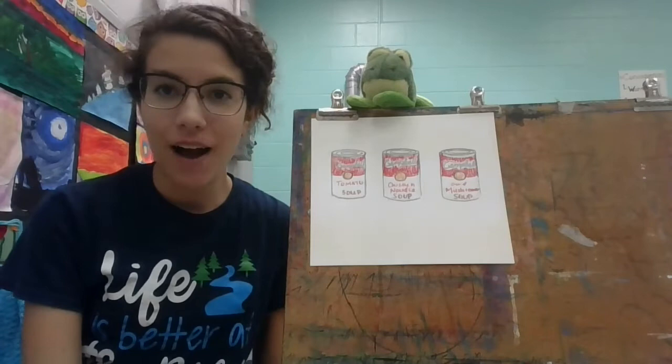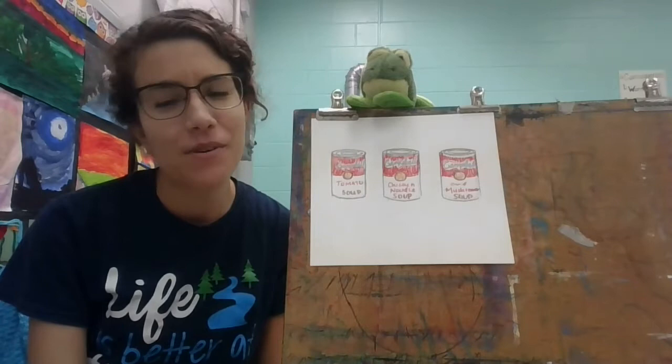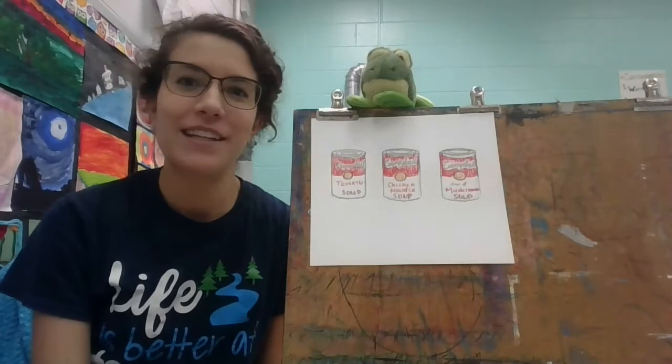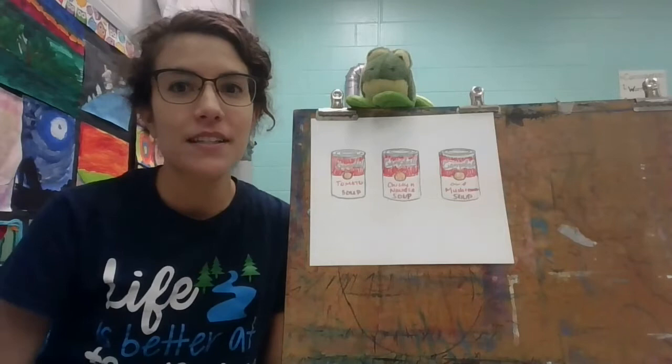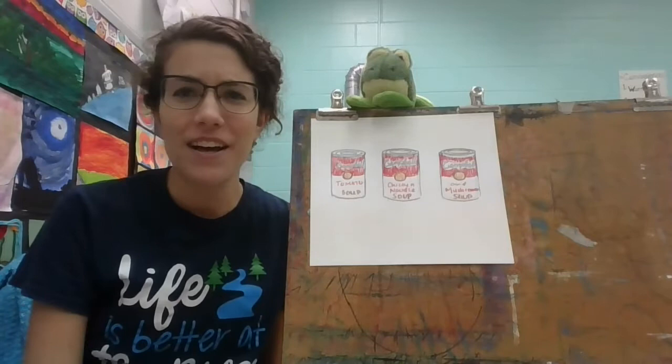Hey art friends! We've been talking about Andy Warhol today, pop art, and how he liked to draw and paint things that were popular and things that he liked. He loved Campbell's soup, and so his friend asked what do you like, what do you want to draw? And he said I like money, I like soup — so he drew money and he drew soup. He loved to repeat things because he wanted to create that feeling, like when you go to the store and you see soup, soup, soup on the shelves. And he did that in a lot of his artwork.